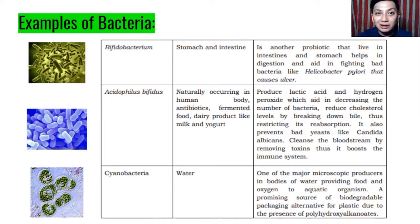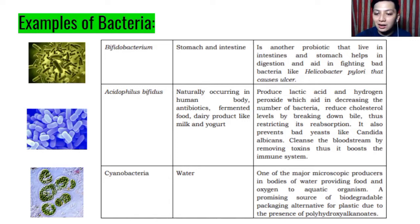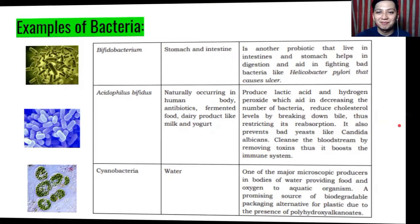Cyanobacteria can be found in water — in swamps, rivers, and lakes. They are one of the major microscopic producers in bodies of water, providing food and oxygen to aquatic organisms. At the same time, they are a promising source of biodegradable packaging as an alternative to plastic due to the presence of polyhydroxyalkanoates. Unlike plastics, materials from cyanobacteria are biodegradable.